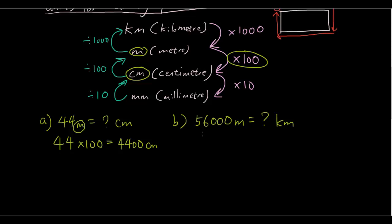Okay, let's do the second one. 56,000 meters is how many kilometers? Now I'm going to use a different colored pen. So we're starting with meters. So let's circle that. We've got meters. We want to go to kilometers, which is here. So we're going upwards. So we're going to divide by 1,000. So 56,000 divided by 1,000. So we cross out the three zeros. We get 56 kilometers. So that's the answer there.